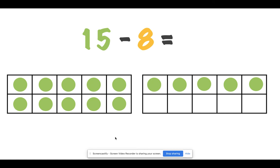What about this one? It looks like these 10 frames are getting a little fuller. This number sentence says 15 minus 8 equals. What would be the difference? How many did you start with? That's right, you started with 15. So how many are you taking away? What is your change? Let's count, let's take away 8.